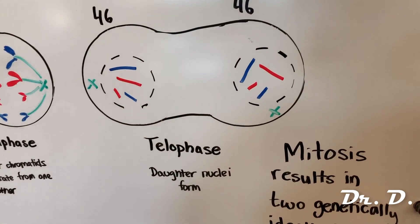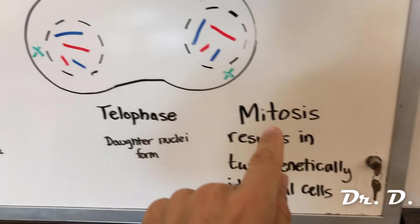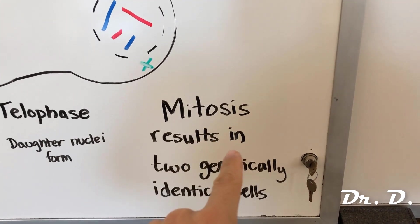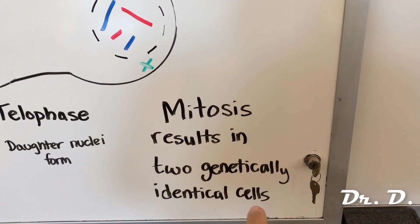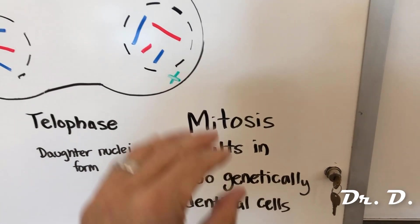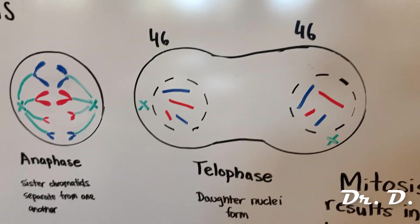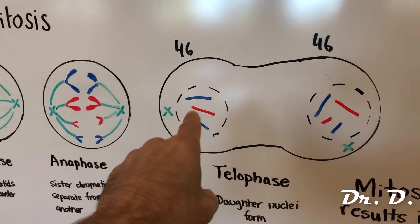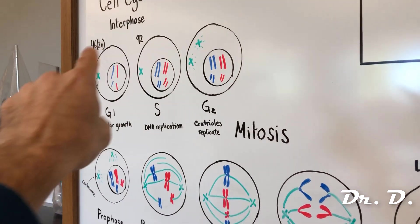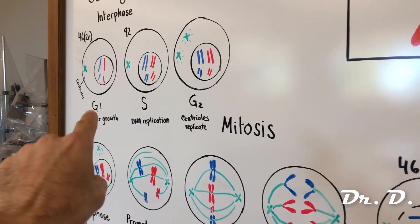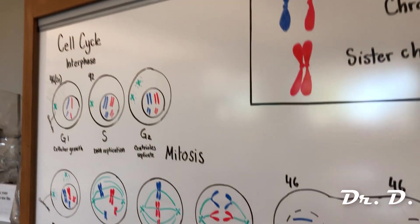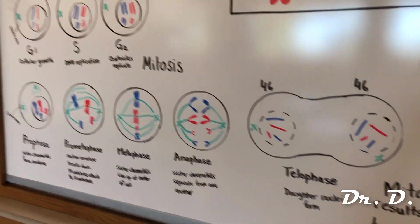Mitosis plus cytokinesis is called M phase, or mitotic phase. The product of mitosis is two genetically identical somatic cells — identical to one another and identical to the original cell. I hope this helps. Please let me know in the comments if you have any questions, and thank you for watching.